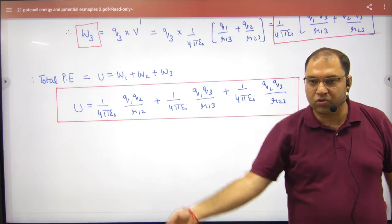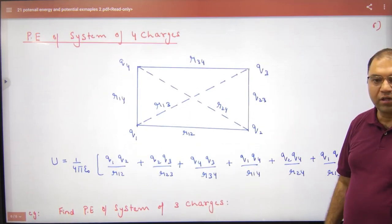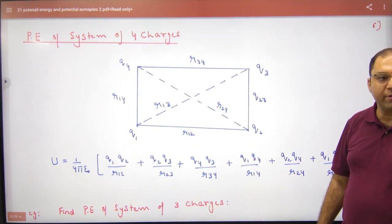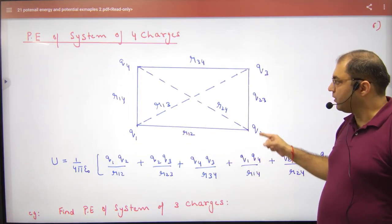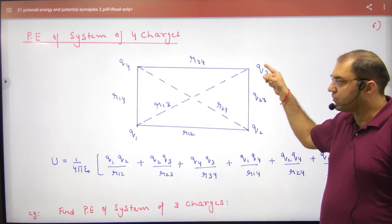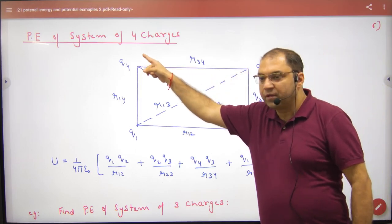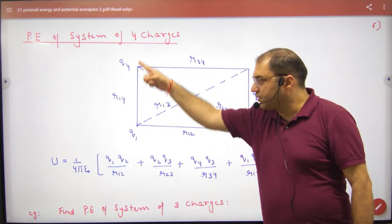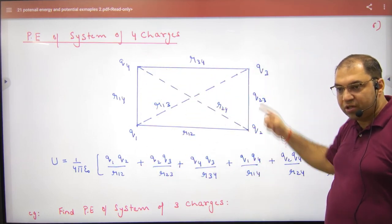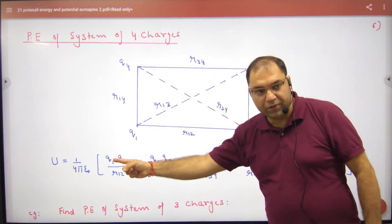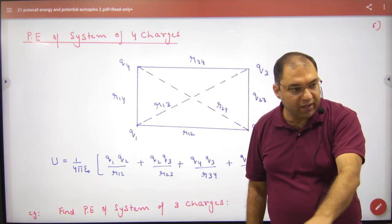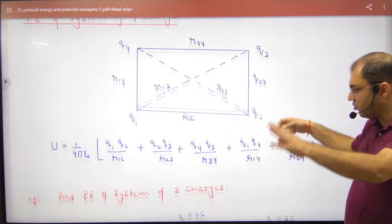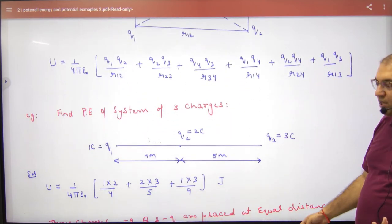जैसे system of four charges में कितने pairs बनेंगे? 6 pairs। 1, 2, 3, 4, 5, 6 — तो 6 energies calculate कर लेंगे और add करके answer निकाल लेंगे, कुछ और करने की जरूरत नहीं।